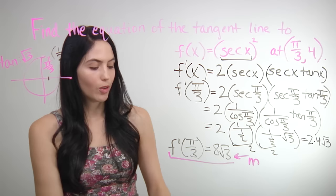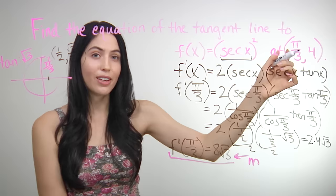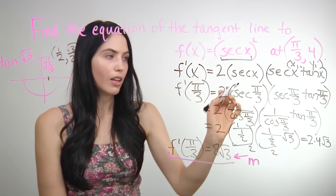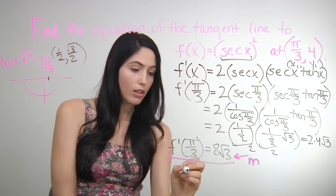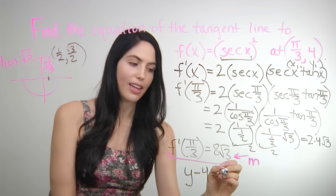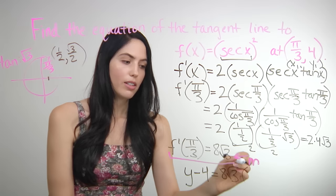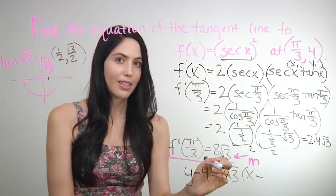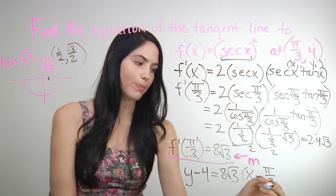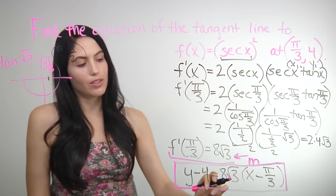Step 3: find the y value. Here you were given the full point, so y is 4. Your y1 in the point-slope form is 4, you have your x1 which is pi over 3, and you have your m which is 8 root 3. The final step: y minus 4 equals 8 root 3 times parenthesis x minus pi over 3. You don't want to write the decimal version — just leave 8 root 3 and pi over 3. This is a totally valid way of writing your final answer in point-slope form, and is the equation of the tangent line to this f at that point.